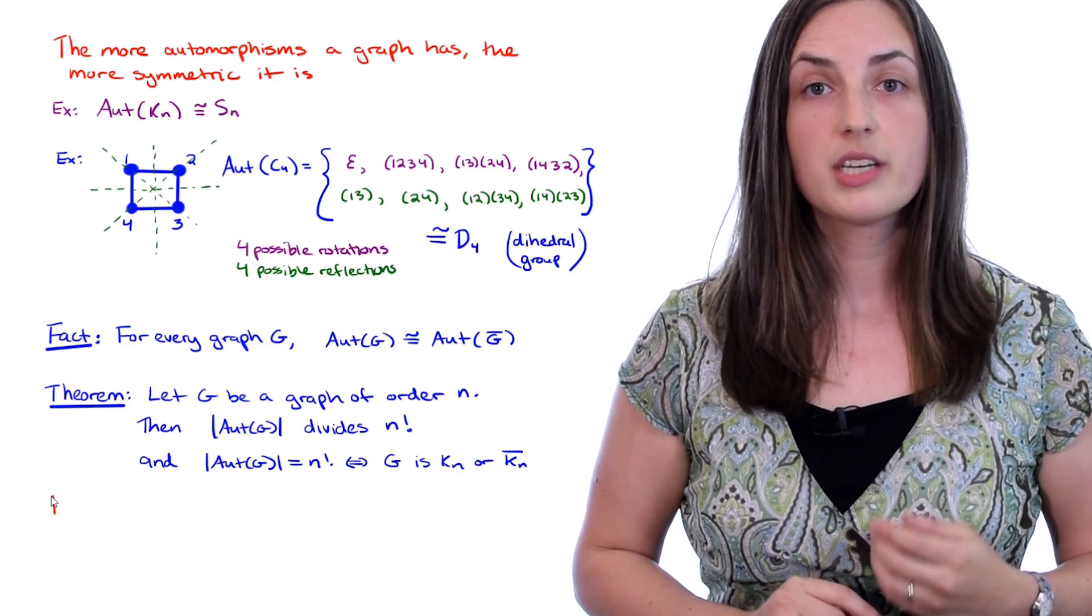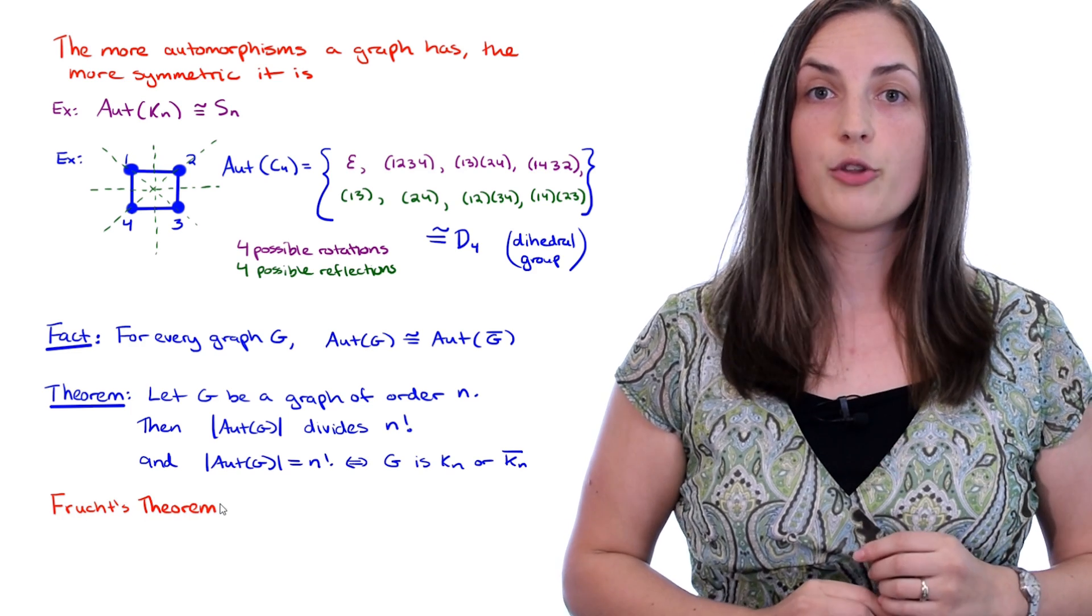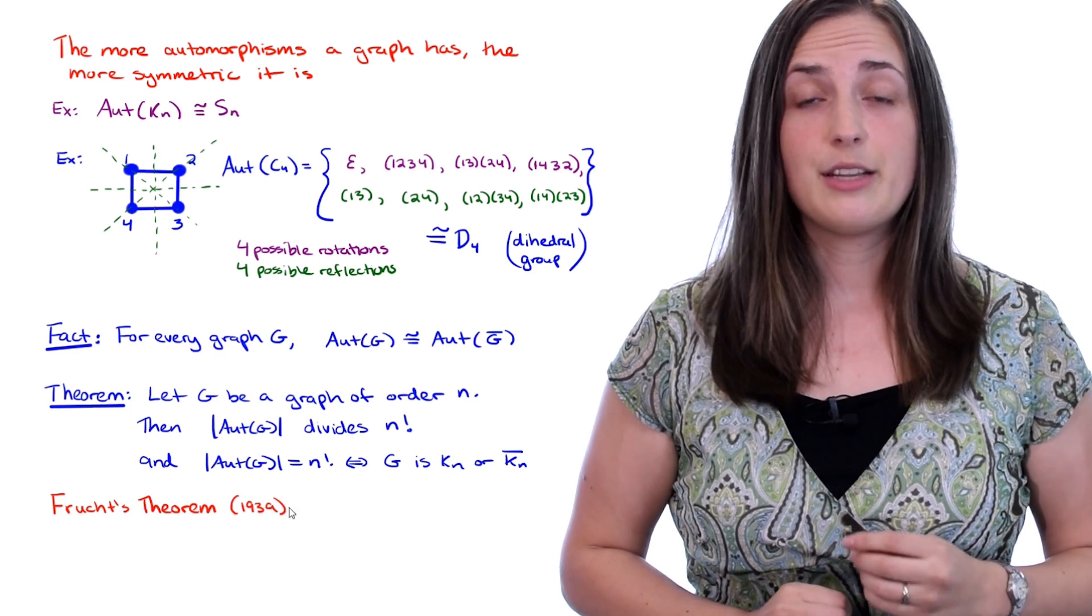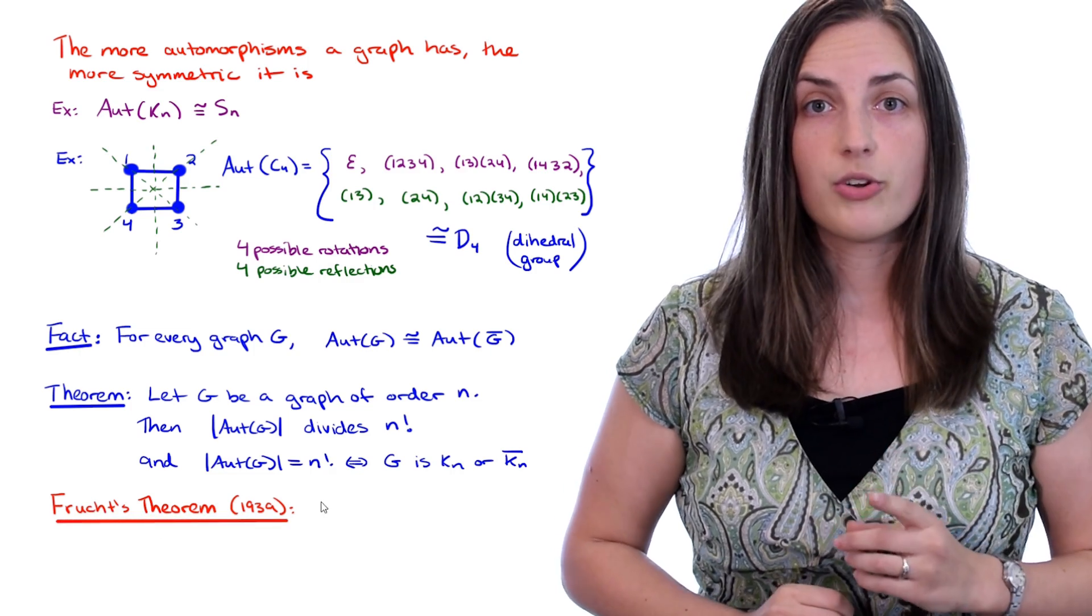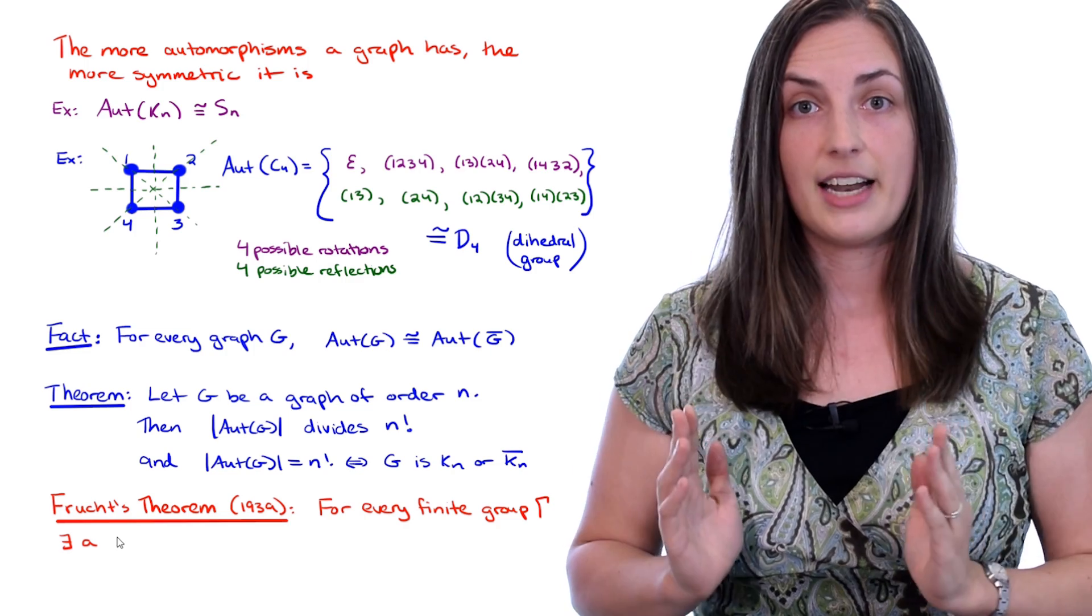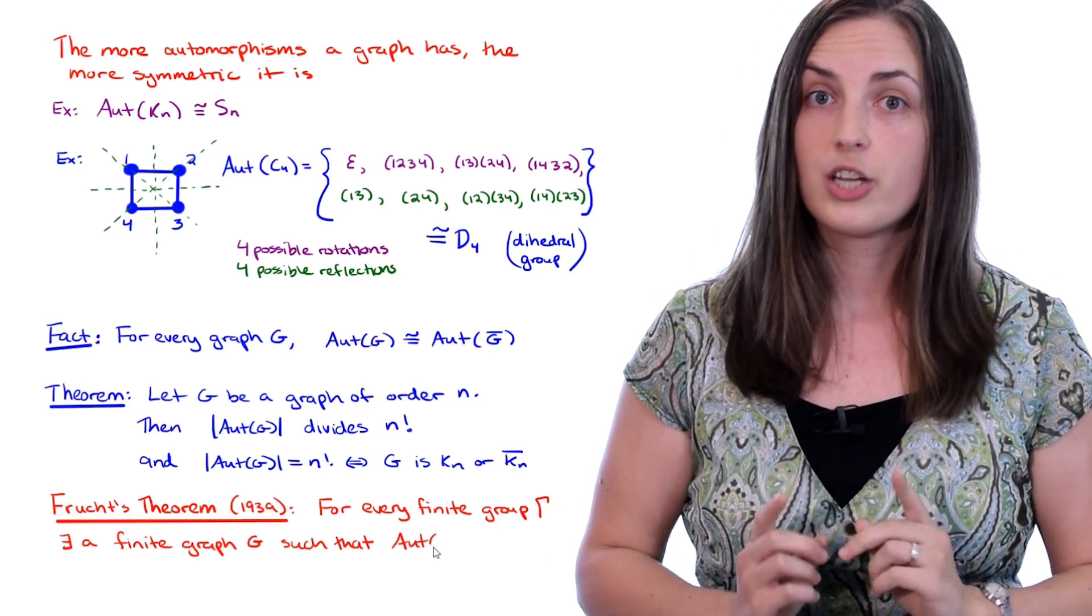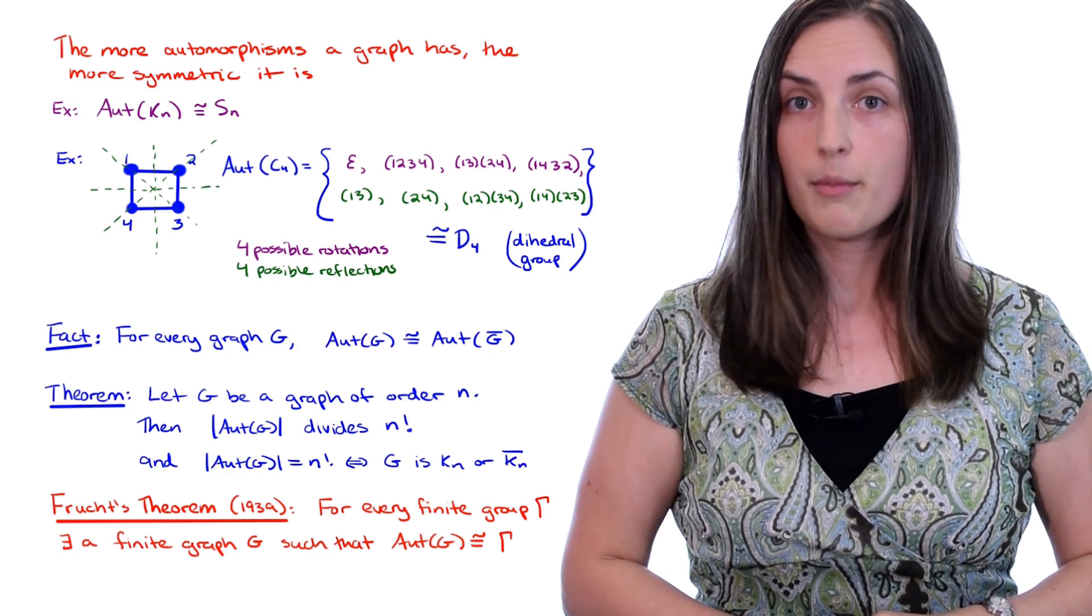Perhaps one of the most incredible results about automorphisms is the following result proved by Frucht in the 1930s. He showed that for every finite group there exists a finite graph whose automorphism group is isomorphic to that group that you chose. Pretty powerful.